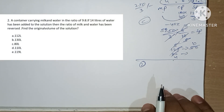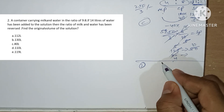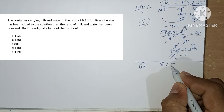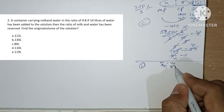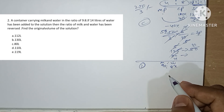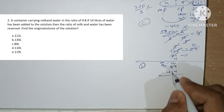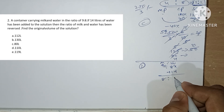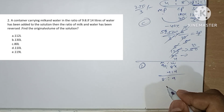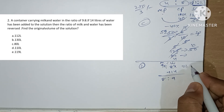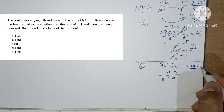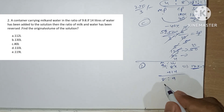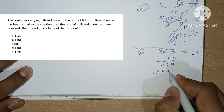Second question: a container carries milk and water in the ratio of 9 is to 8. Let's assume them as 9x and 8x. If 14 liters of water is added to the solution, then the ratio of milk to water becomes reversed, that is 8 is to 9. The question asks for the original volume of the solution, which is 9x plus 8x equals 17x.